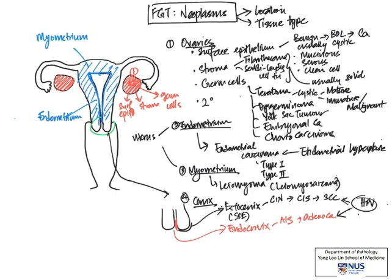It is very important to note that squamous cell carcinoma and adenocarcinoma and the premalignant conditions are associated with HPV infection, particularly certain types — type 16 and 18. This is the whole basis for cervical smears or Pap smears and HPV screening, and also for vaccination to prevent the occurrence of squamous and adenocarcinoma.